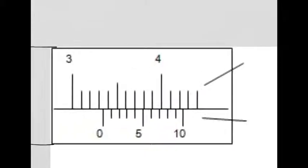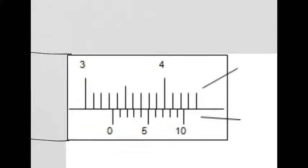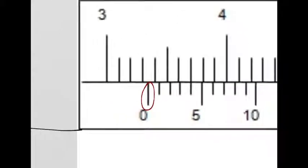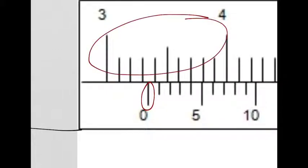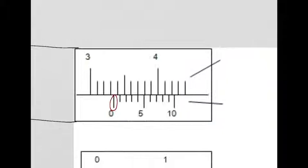And here's how you take this reading. We want to look at where this line right here, this line at the zero on the moving scale, we want to look at where it falls on the fixed scale to get our first two readings. So I'll set up some blanks here. That'll be our first reading, decimal, second reading, third reading.